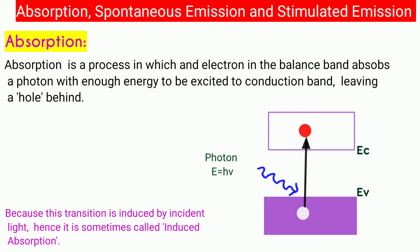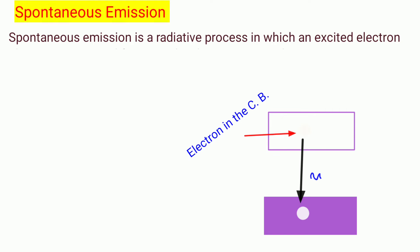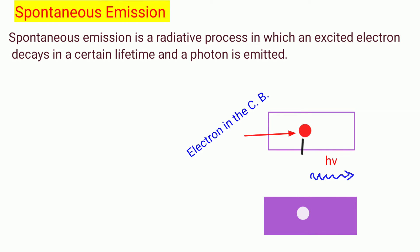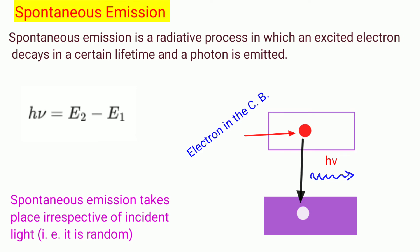Spontaneous emission is a process in which an electron decays to an available lower energy state and emits a photon. This process occurs naturally without interaction with other photons, and can occur in solids, liquids, and gases. The energy of the emitted photon equals the energy difference between the electron energy levels involved. The emitted photons may have any direction, phase, and polarization.